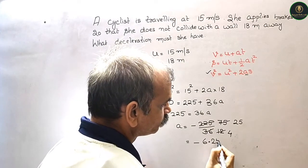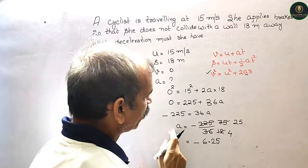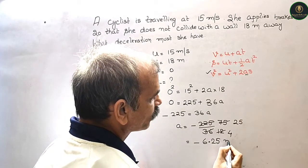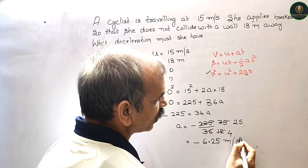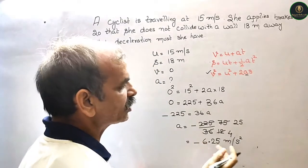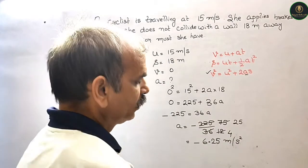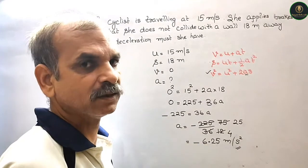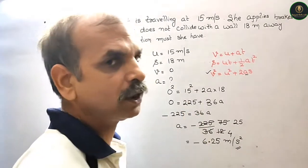So this will be 6.25. So here after, this deceleration is minus 6.25 meters per second square, or you can say this deceleration is 6.25 meters per second square. So we can say it's deceleration or retardation. So this is how you can do it.